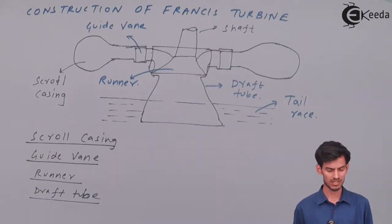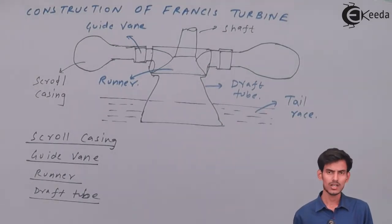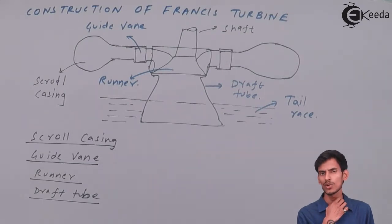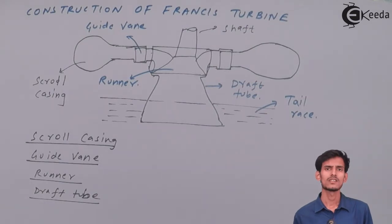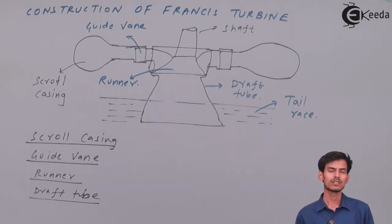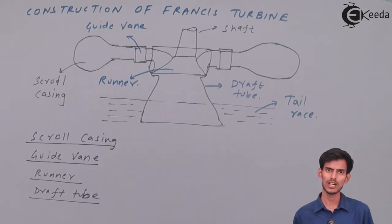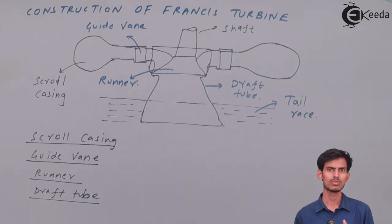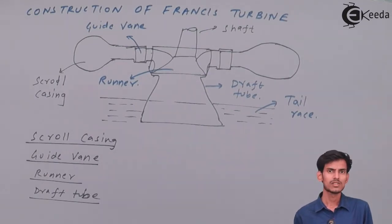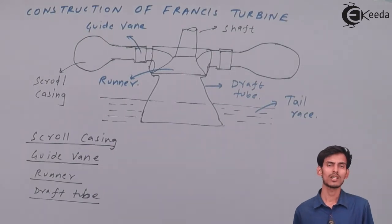These four are the main important parts of the Francis turbine, each with a specific use. The scroll casing guides water into the guide vanes, and is designed so that its cross-sectional area goes on decreasing as water passes through, which helps maintain constant velocity. After the scroll casing, water moves into the guide vanes — aerofoil-shaped structures that direct water into the runner without shock or friction. As water enters the runner, it creates impulse and momentum, pushing the runner to rotate and generate power.